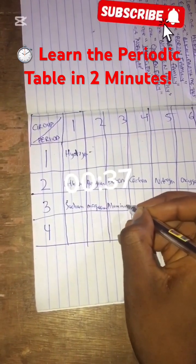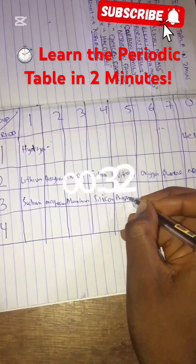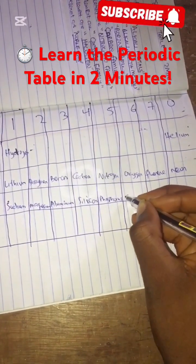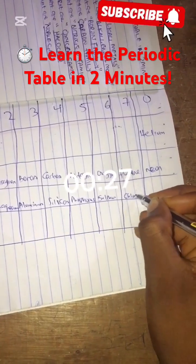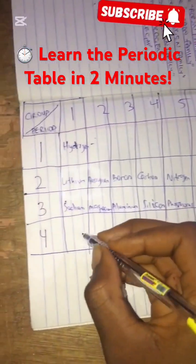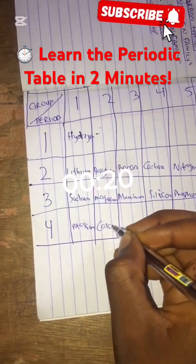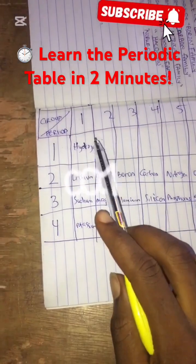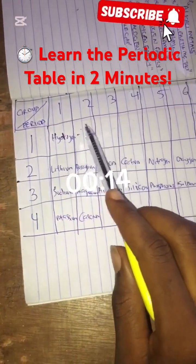Silicon, phosphorus, sulfur, chlorine, argon, potassium, and calcium. So guys I'm done.